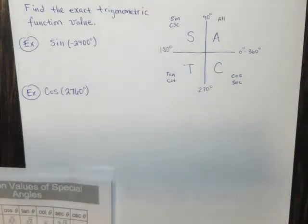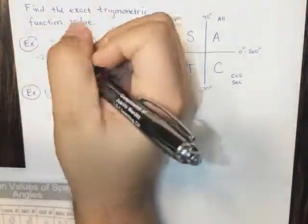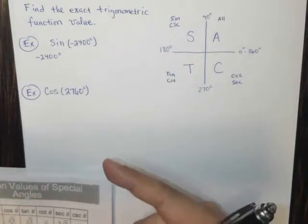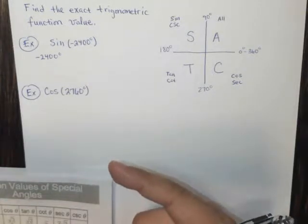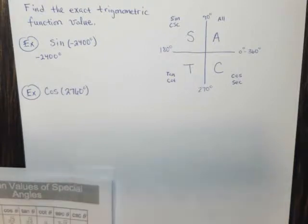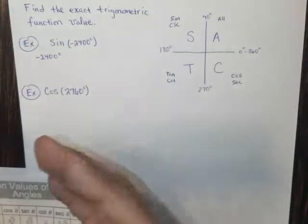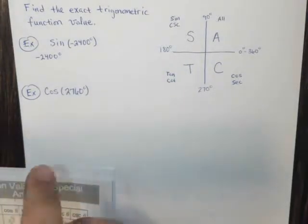So let's see. If I have negative 2,400 degrees, I'm going to add 360 because I want to get a positive value. So I'm going to add 360 several times. And I'll let you figure that out. So if you want to pause right now, you can pause. But just add 360 until you get the first positive value.